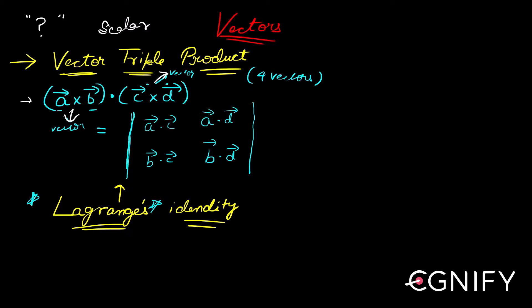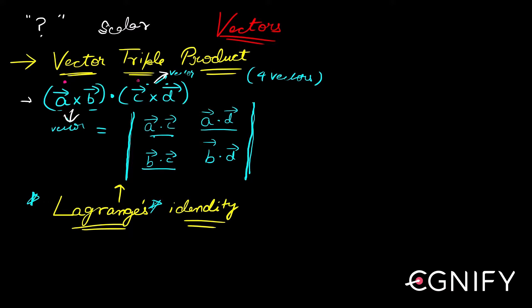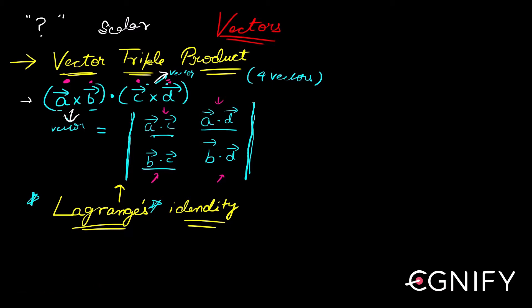That scalar can be obtained by finding the determinant of this matrix. a·c is a scalar, a·d is a scalar, b·c is a scalar. Observe the pattern: a is dotted with c first, then the same a is dotted with d — so a·c, a·d positions are occupied. Then b is dotted with c, and finally b is dotted with d. The determinant of this matrix gives you the scalar from this expression.